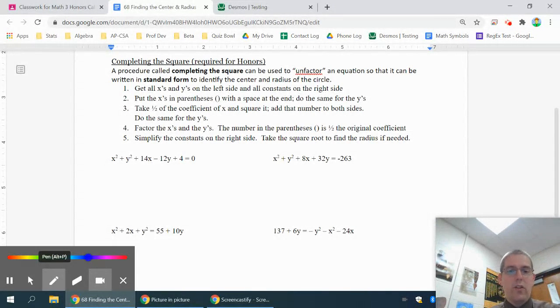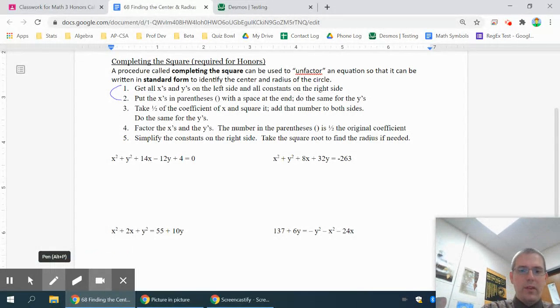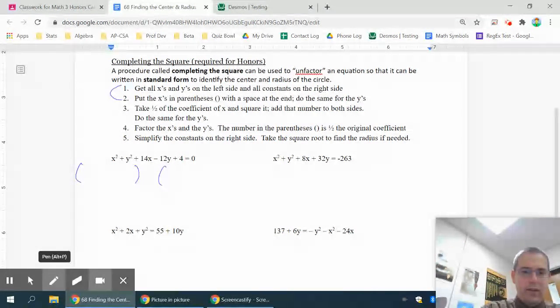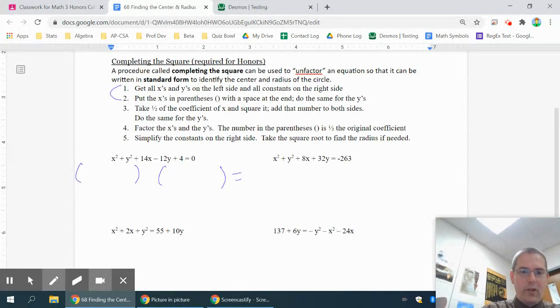So the first thing you need to do is get all the x's and y's on one side and the constants on the right side. And also the second thing, I usually do those two steps kind of together. Put the parentheses with x's, x's in a parentheses with the space at the end and the y's in a parentheses with the space at the end. And then the constants over here. So to move the 4 over there, I would have to minus 4 from both sides. So that's going to give me a minus 4.